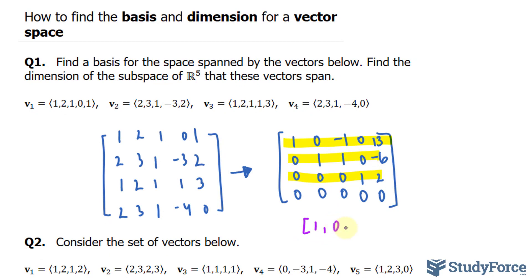It tells us that the basis for the row space are the following. 1, 0, negative 1, 0, and 13. That corresponds to that first highlight. 0, 1, 1, 0, and negative 6. The second one. And 0, 0, 0, 1, and 2.